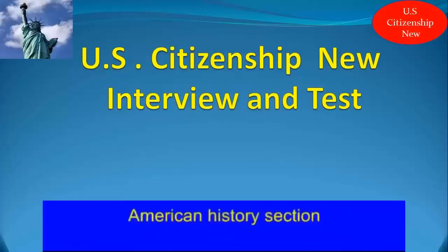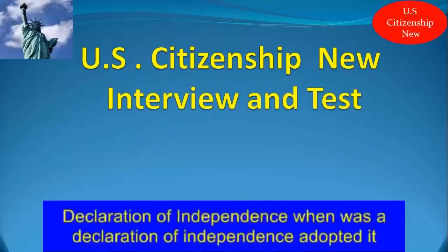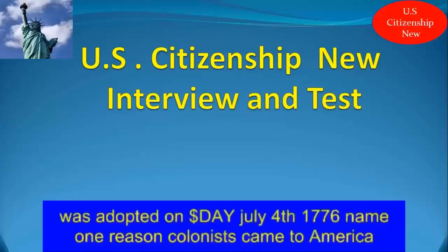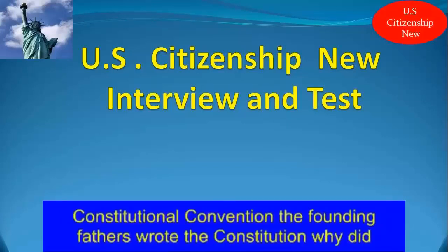Now we go to the American History section. Who wrote the Declaration of Independence? Thomas Jefferson wrote the Declaration of Independence. When was the Declaration of Independence adopted? It was adopted on July 4th, 1776. Name one reason colonists came to America. They came here for freedom and religious freedom. What happened at the Constitutional Convention? The founding fathers wrote the Constitution.